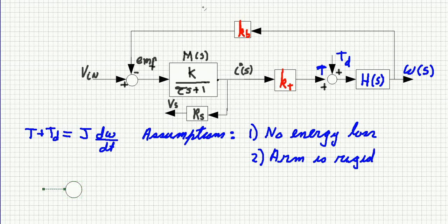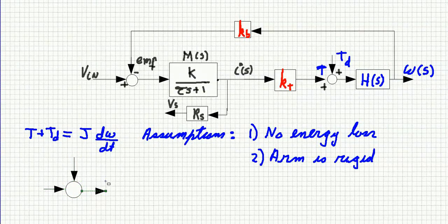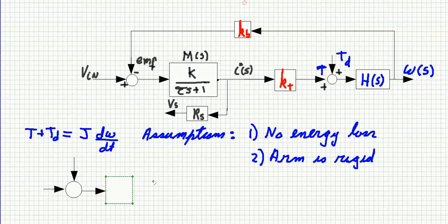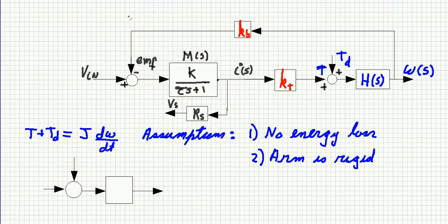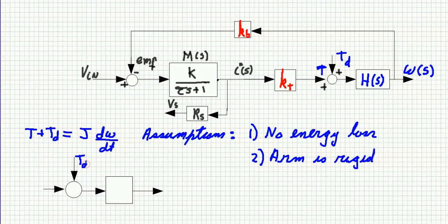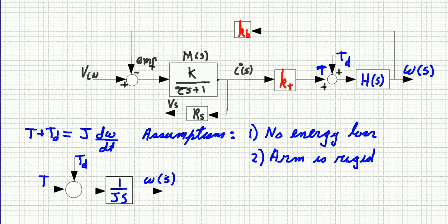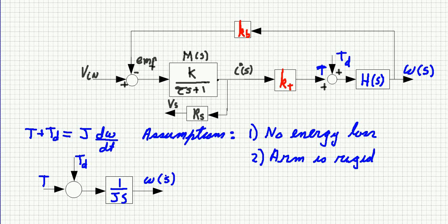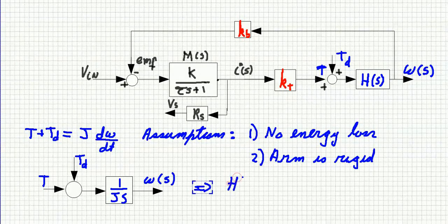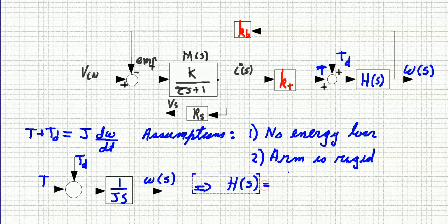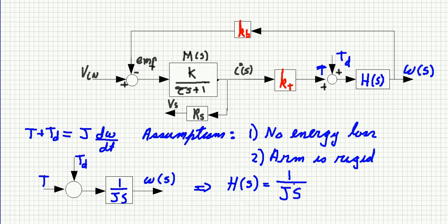In this case, we can draw our block diagram. We have the torque disturbance TD, the torque provided by the VCA, and our angular velocity as the output of the transfer function. Then our transfer function Hs will be simply an integrator with a gain 1 over J, where J is the inertia of the arm.